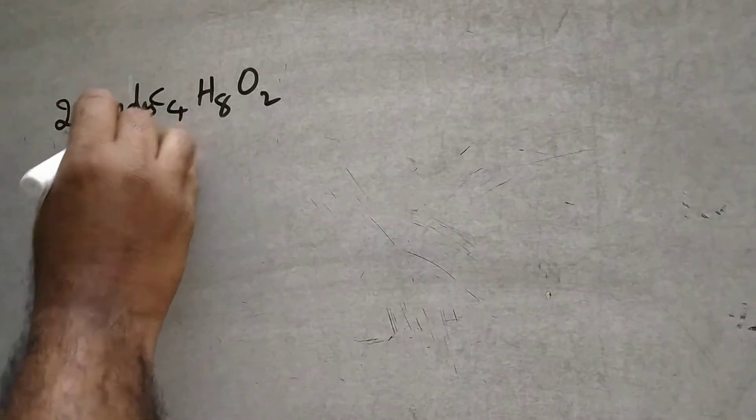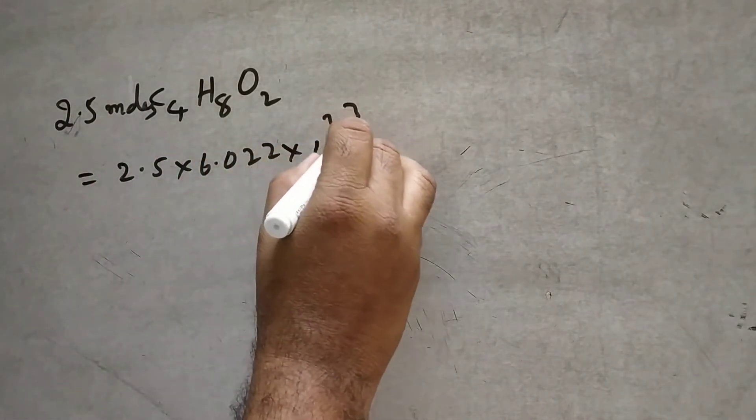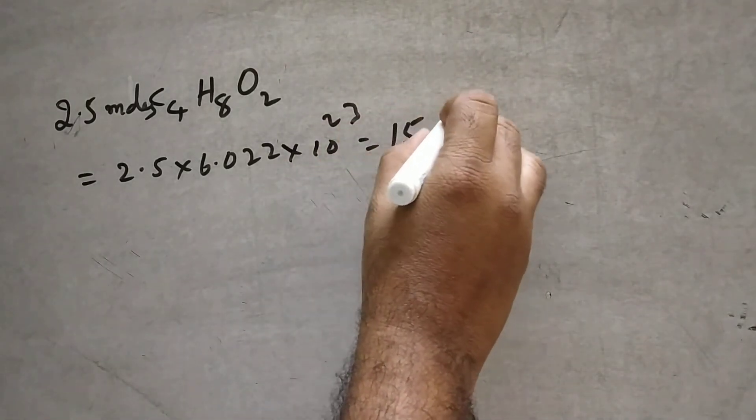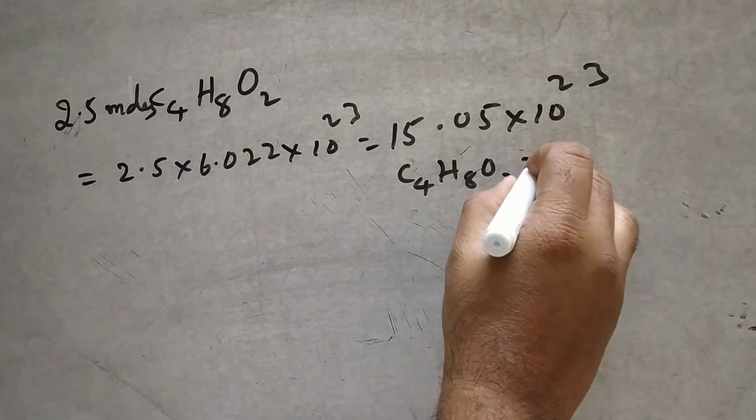Similarly, another problem: ethyl acetate, that is C₄H₈O₂. How many molecules are present if 2.5 moles of ethyl acetate are given? It is nothing but 2.5 into 6.022 into 10 to the power of 23, which gives 15.05 into 10 to the power of 23 C₄H₈O₂ molecules.